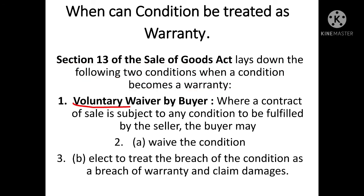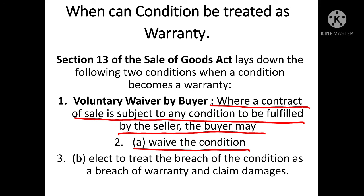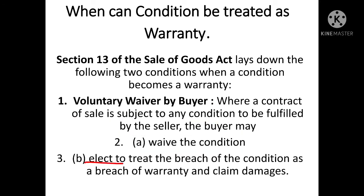पहला है voluntary waiver by buyer। Voluntary का मतलब मर्जी से - अगर buyer voluntarily condition को waive कर दे। Where a contract of sale is subjected to any condition to be fulfilled by the seller, the buyer may waive the condition, or elect to treat the breach of condition as a breach of warranty and claim damages। अगर seller ने condition fulfill नहीं करी, तो buyer की मर्जी है - वो condition हटा सकता है या breach of condition को as a breach of warranty treat करके damages claim कर सकता है।